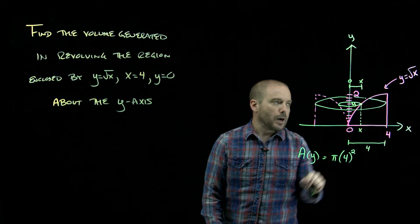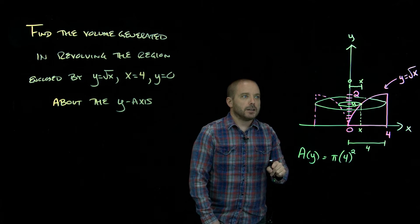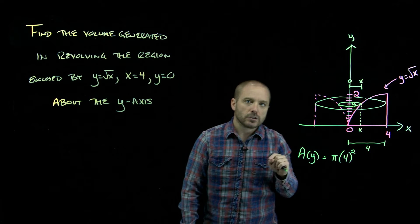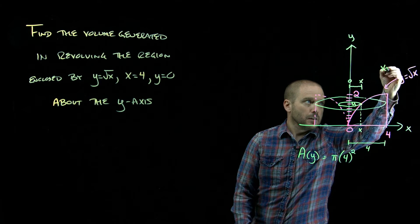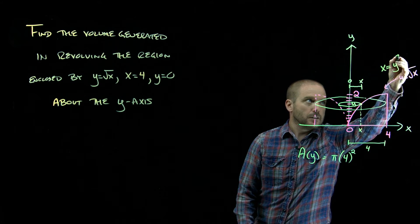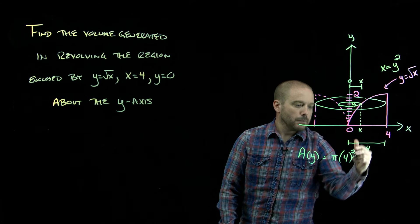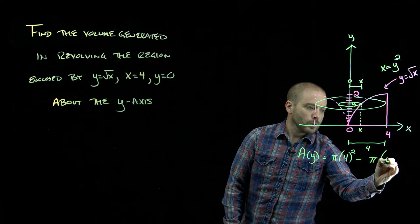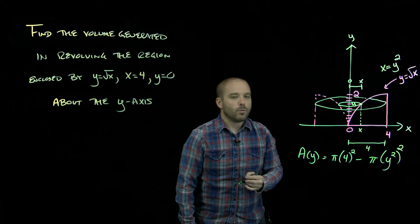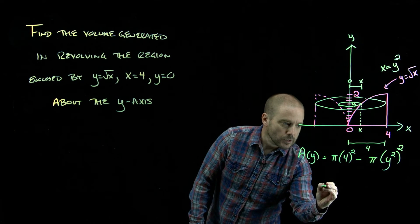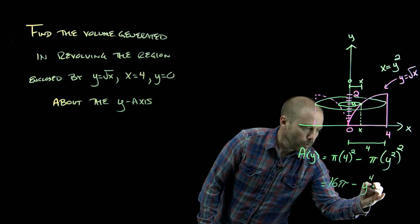But we're integrating with respect to y, so what is x in terms of y? We know the relationship from our function, but it's not given the way we would like — we'd like x as a function of y. Right now we know y as a function of x, so we need to invert that equation. If y is square root of x, then x is y squared. So the radius of the small circle is x, which is y squared, and since it's πr², that's π·(y²)² = π·y⁴. So our cross-sectional area, simplified, is 16π minus y⁴π.